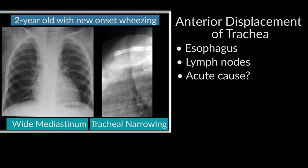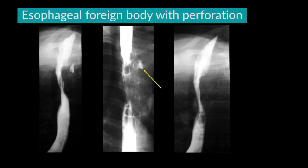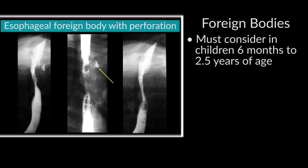Because this happened acutely, we were concerned about an ingested foreign body with an abscess. An upper GI and barium swallow showed that this child had ingested a sharp plastic foreign body that caused perforation of the esophagus and a periesophageal abscess that was anteriorly displacing and compressing the trachea. Foreign bodies are an absolute must to consider in the appropriate age group, roughly six months to about two and a half years of age.